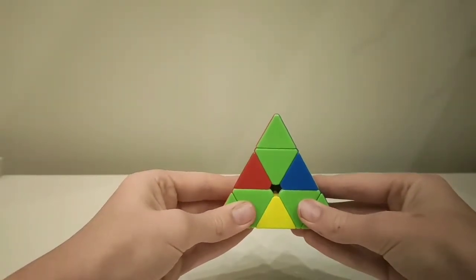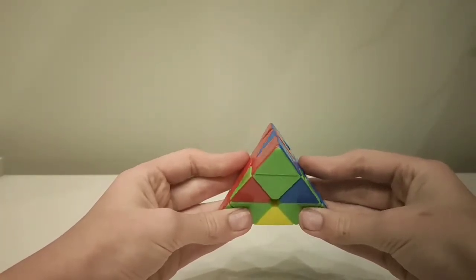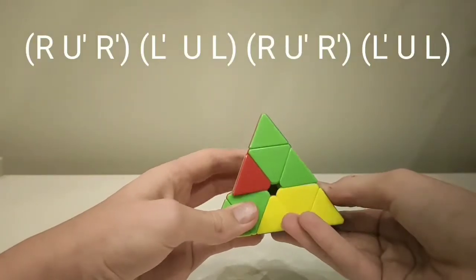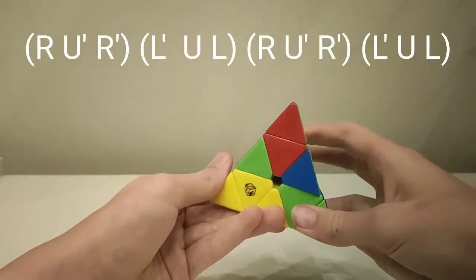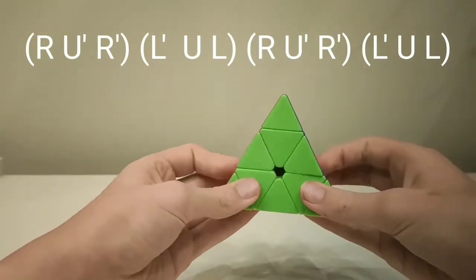The first case is this, when all the pieces are flipped and in the right place. The algorithm for this is R U' R' L' U L R U' R' L' U L.